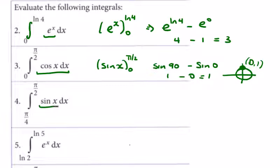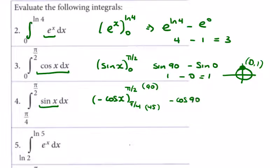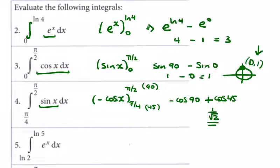Now we integrate sin x, which goes to minus cos x. You can factor out the minus if you want. Evaluated between π/2 (90°) and π/4 (45°) — using degrees in your calculator, just jot down some rough work. We get minus the cos of 90, minus minus, so plus the cos of 45. The cos of 90 is 0 and the cos of 45 is 1/√2, so the answer is 1/√2.